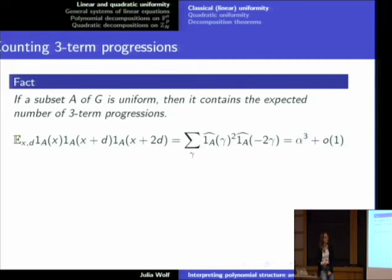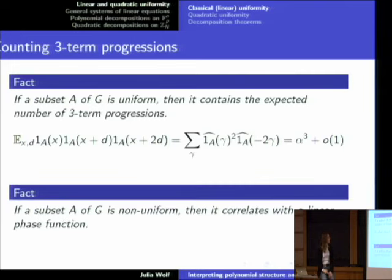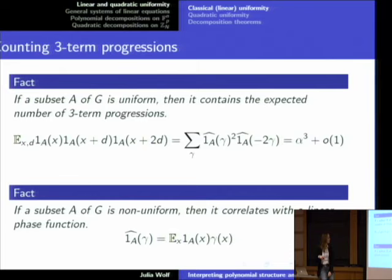So if we set out to establish the existence of an arithmetic progression of length three, and if we can say that the subset A is uniform — meaning it's kind of random-like — then we actually have lots of three-term progressions. The other case: what can we say if A is not uniform? Then by definition, there has to be a large Fourier coefficient, which means that the indicator function correlates with a linear phase.